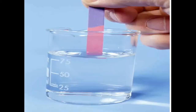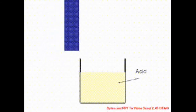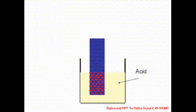Blue litmus paper turns red in acid. Here is an image of blue litmus paper turning red in acid. If you put blue litmus paper on an acid, it turns red.